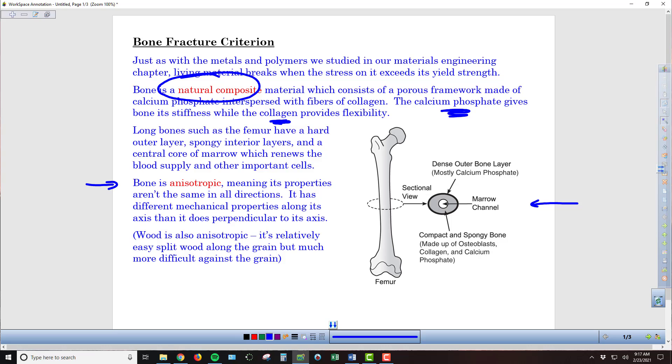Bone functions the same way. In the vertical direction, the bone is going to be extremely strong, but if you hit it from the side, the properties are significantly different, it's going to be significantly weaker.